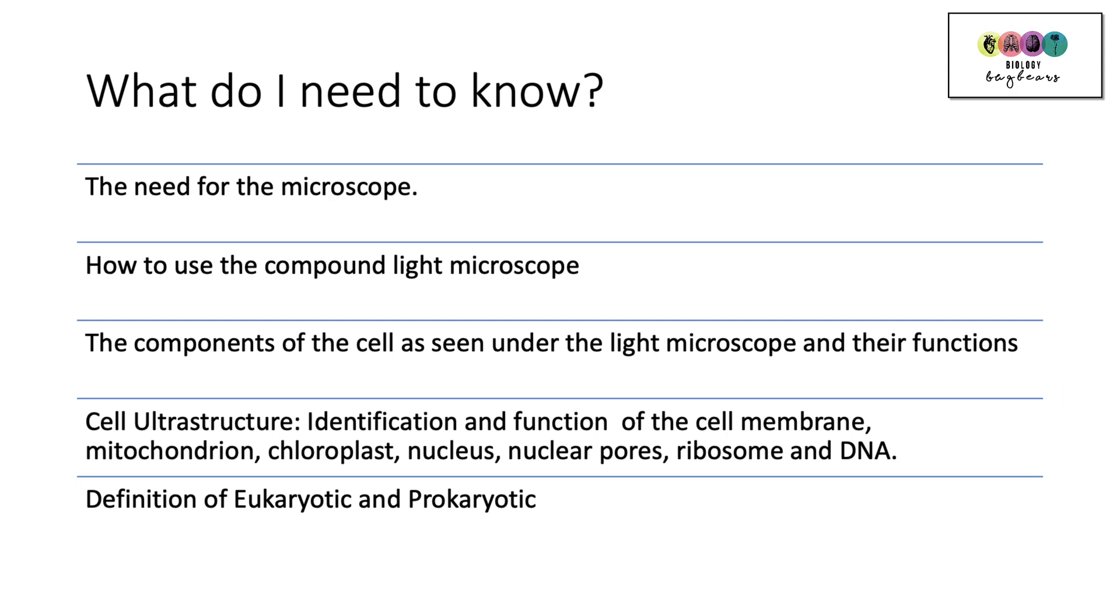And then move on to the cell ultrastructure. So this is where you're looking at the cell using an electron microscope. So just make sure that you can recognize a diagram of the ultrastructure of a plant cell and an animal cell and be able to identify these key features: the cell membrane, the mitochondrion, the chloroplast in the plant cells, the nucleus, nuclear pores, ribosome, and DNA, and be able to give a function for each of those. Finally, know how to define eukaryotic and prokaryotic. That is asked a lot in section A.